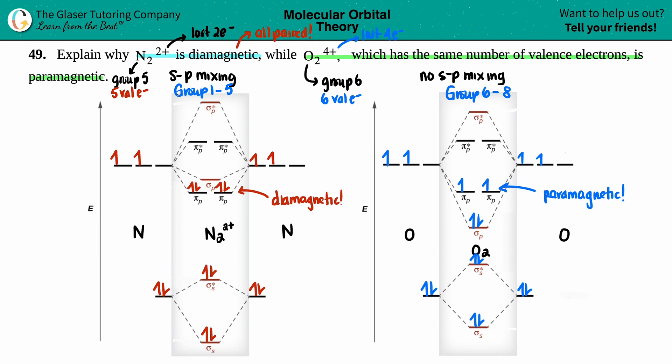So explain why N2²⁺ is diamagnetic while O2⁴⁺, which has the same number of electrons, is paramagnetic. It's because of SP mixing. N2 has SP mixing while O2 does not. And because of that, your molecular orbitals, the different, mainly the sigma PX orbitals are different in energy. And that's what makes one diamagnetic and one paramagnetic.